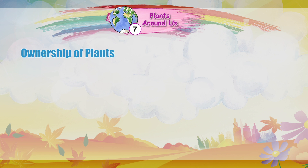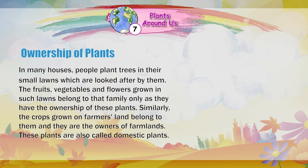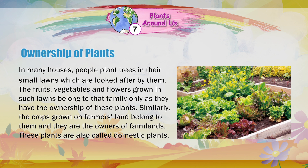Ownership of plants. In many houses, people plant trees in their small lawns, which are looked after by them. The fruits, vegetables and flowers grown in such lawns belong to that family only, as they have the ownership of these plants. Similarly, the crops grown on farmers' land belong to them and they are the owners of farm plants. These plants are also called domestic plants.